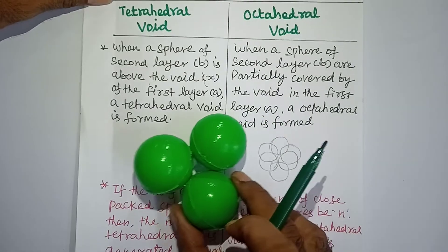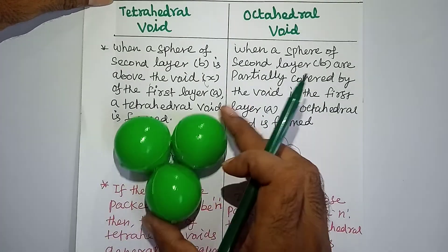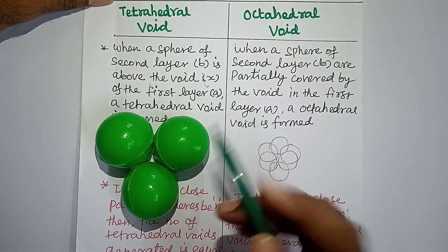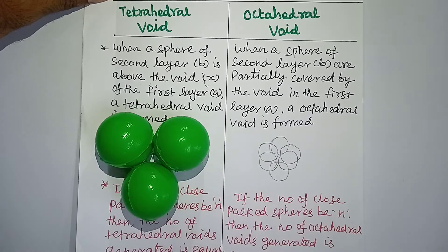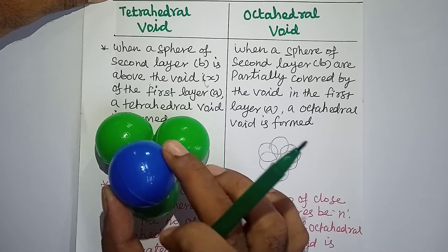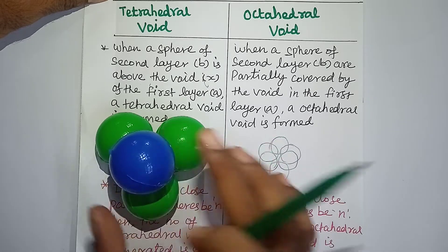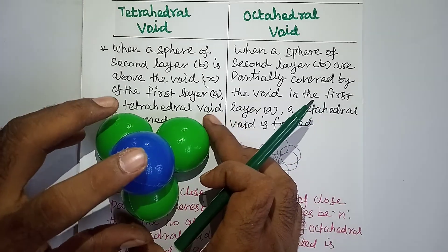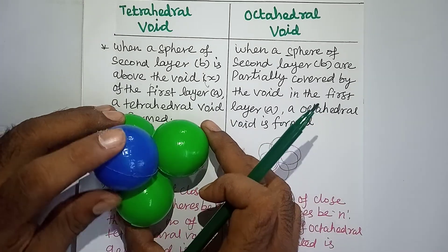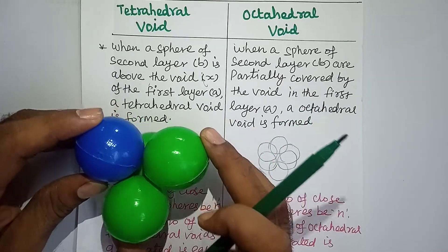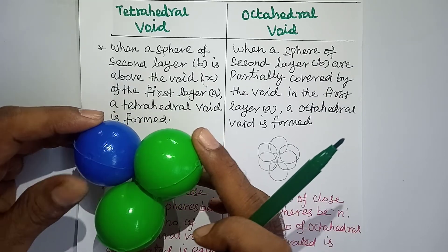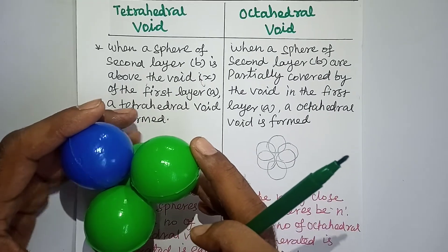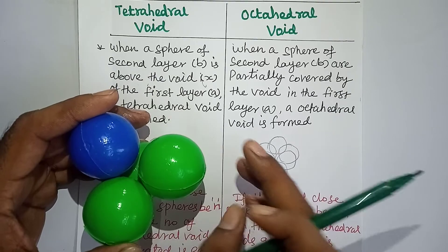Here you can see three atoms present in one layer. We place a second layer on top of the first layer. There is some vacant space between this first layer and the second layer. This void is called a tetrahedral void.